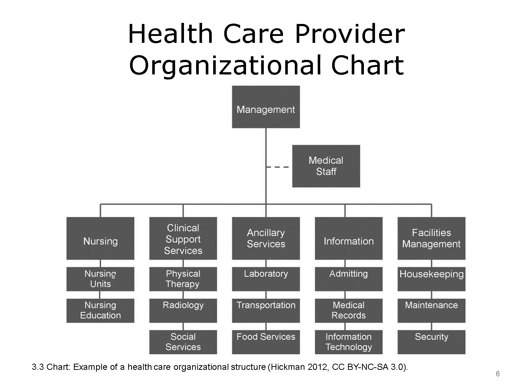The first box, management, links to every division. Before it reaches the divisions in the third row, it connects by a dotted line to medical staff, a quasi-autonomous division that usually reports to the chief medical officer or the chief executive officer. The five divisions and example departments within those divisions are nursing with nursing units and nursing education departments, clinical support services with physical therapy, radiology, and social services departments, ancillary with laboratory, transportation, and food services departments, information with admitting, medical records, and information technology departments, and facilities management with housekeeping, maintenance, and security departments.